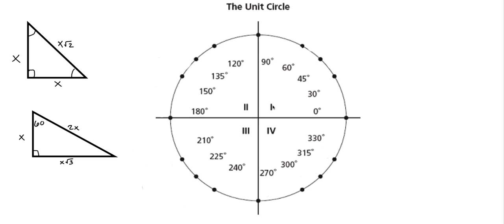In this video I'm going to attempt to explain where all of the information inside the unit circle comes from. The unit circle is based on special right triangle ratios. The 45-45-90 triangle has sides of X, X, and a hypotenuse of X√2. The 30-60-90 triangle has side lengths of X, X√3, and a hypotenuse of 2X.